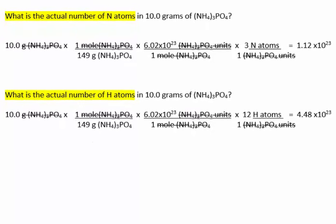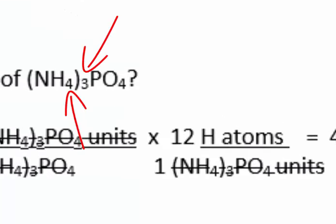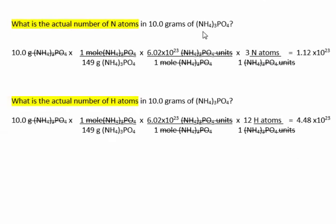If someone were to ask how many hydrogen atoms are in the 10 grams of ammonium phosphate, the calculation would be the same up to the last step, where there are 12 hydrogen atoms per every one formula unit — essentially 4 times as many hydrogens. That comes from the formula NH4, but there are 3 NH4 groups, so there are 3 times 4 hydrogens.